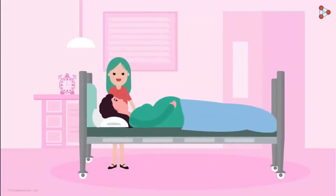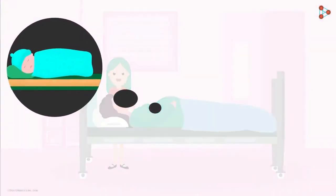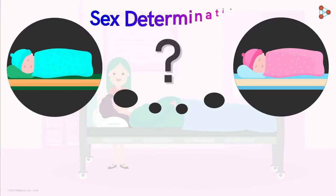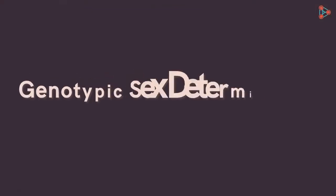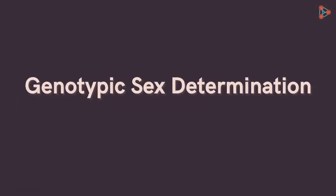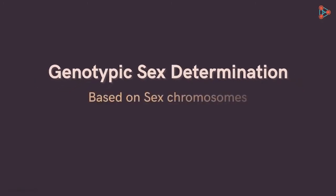Nora had been to see her aunt, who was expecting a baby. She was curious to know whether it would be a baby boy or a baby girl. But how can this be found? How is the sex of a child determined? The Genotypic Method: in this type, the sex of a child is determined by the sex chromosomes.